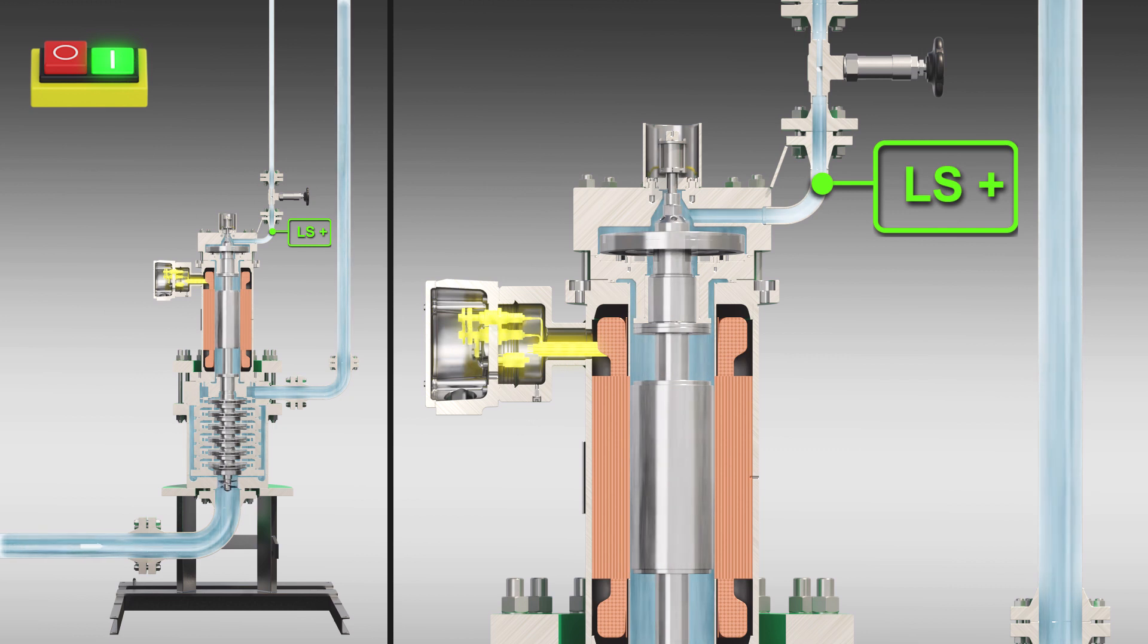Thanks to its design, the Hermetic canned motor pump is wear-free and requires no maintenance for continuous operation. Its multi-stage design offers better efficiency factors and lower NPSH values. An upstream inducer is installed to further reduce the pump's NPSH values.